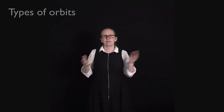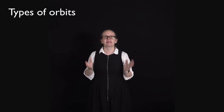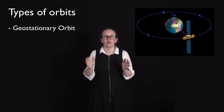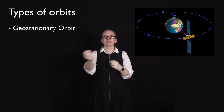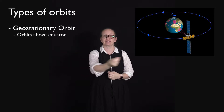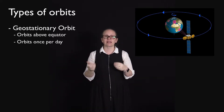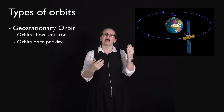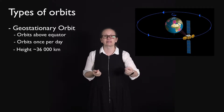We're now going to discuss some different types of orbits. There are a few types which are very commonly used. One of these is a geostationary orbit. In a geostationary orbit the satellite orbits above the equator and it orbits once a day. In this case the satellite is travelling from west to east and it's at a height of around about 36,000 kilometers.